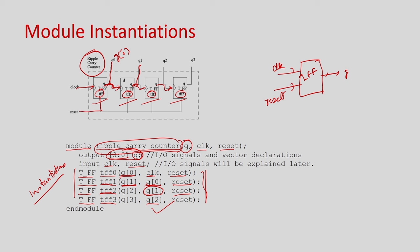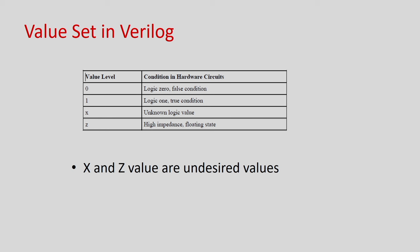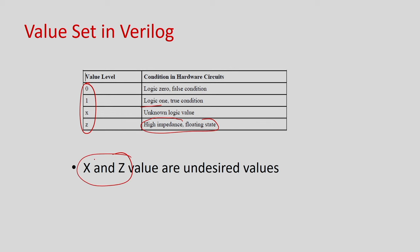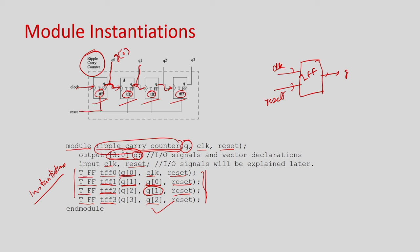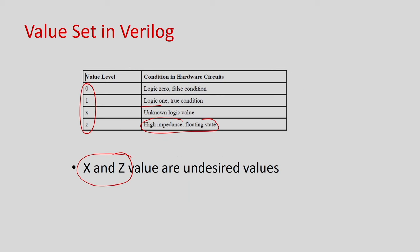In Verilog there are four values: 0 is logical 0, 1 is logical 1, x is an unknown value when interconnections are wrong, and z is the high-impedance or floating value when multiple inputs drive the same destination. Usually x and z are undesirable — getting them means you may have made a mistake in interconnections. The desirable values are 0 and 1.